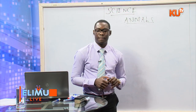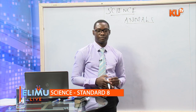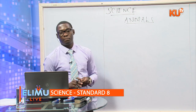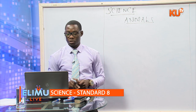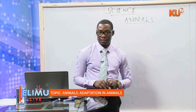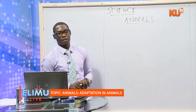Animals that are kept at home are domestic animals, and they include the cat, the dog, and others. Then we also have wild animals — these are animals not kept at home, found in the forests. We also have useful animals and harmful animals. Useful animals are those we keep at home; for example, a dog is useful because it helps in security. Harmful animals are mostly pests, for example a mite, a tick, mosquitoes, and snakes.